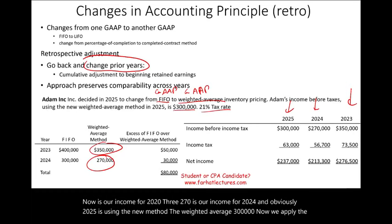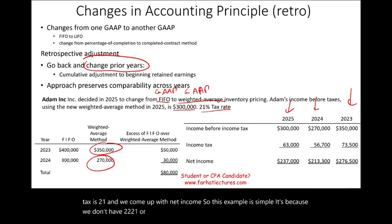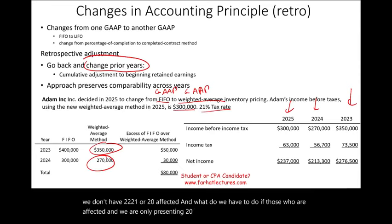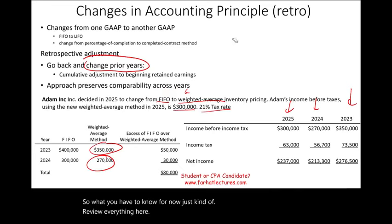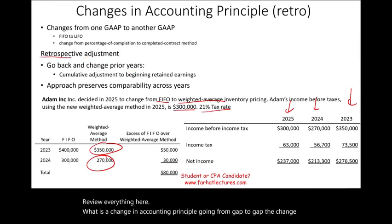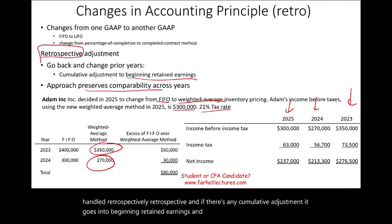We apply the 21% tax rate and compute net income. This example is simple because we don't have years 2022, 2021, or 2020 affected. To summarize: a change in accounting principle means going from GAAP to GAAP; the change is handled retrospectively; any cumulative adjustment goes into beginning retained earnings; and we do this to preserve comparability. We must also disclose to users that we changed our accounting method.